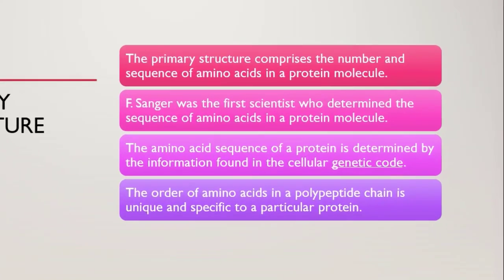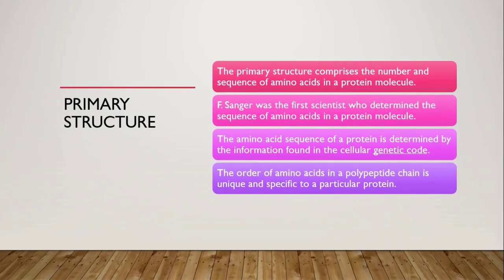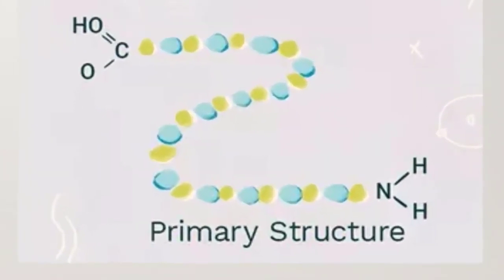First of all, primary structure. Primary structure gives us information about the number and sequence of amino acids. A British biochemist, Frederick Sanger, studied the protein molecule in terms of amino acids and he got a Nobel Prize for his work. The specific sequence of amino acids is determined by the genetic code. For any protein, the number and sequence of amino acids are unique and specific.